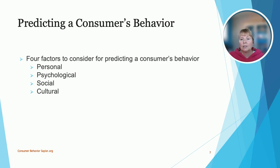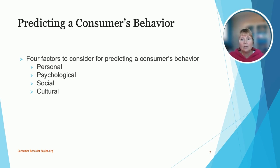There are four factors to consider when attempting to predict a consumer's behavior, and these include personal, psychological, social, and cultural. Each of these factors may influence or change a consumer's behavior. It's also important to consider age and how this influences a consumer over time. For example, a consumer in their 20s will have a different social circle than they will when they reach their 50s, and this will impact their buying behavior. By understanding buying behavior, you may be able to better determine how a consumer may respond to specific marketing.